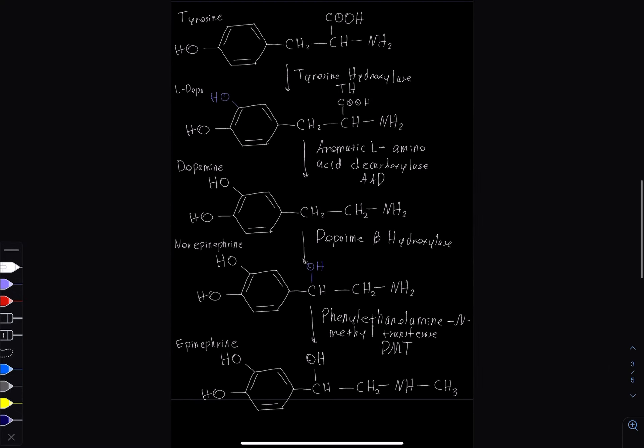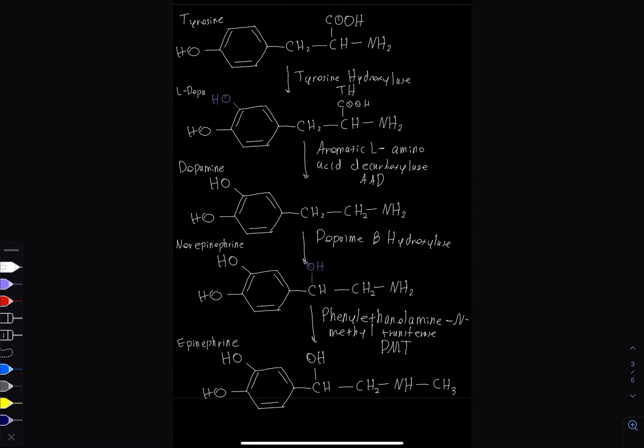We go from tyrosine and use tyrosine hydroxylase or TH to add a hydroxyl group. We then use AAD and take off the carboxyl group, so there's no more carboxyl group there. We use DBH, also known as dopamine beta hydroxylase—we take dopamine and add a hydroxyl group to this carbon over here. Then we use PNMT to go from norepinephrine to epinephrine, and all we do is add the CH3 to the nitrogen.